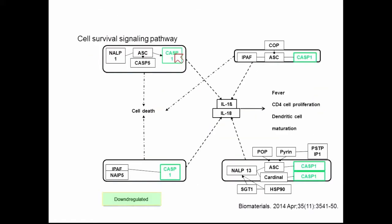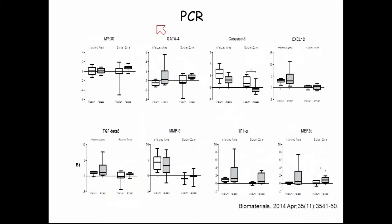The cell survival signaling pathway showed downregulation of caspase-1, which is responsible for upregulation of interleukin-1 beta — a known strong inflammation factor responsible for fever, maturation, dendritic cell and CD4 cell proliferation. PCR confirmed significant downregulation of the caspase-3 gene in the border zone of infarction in EPISEC-treated animals, as well as significant upregulation of myocyte-enhancing factors responsible for myocardial contraction. We also found a trend toward increased myogenin in the border zones of infarction in EPISEC-treated animals, with a similar trend in the infarction area of the EPISEC group.